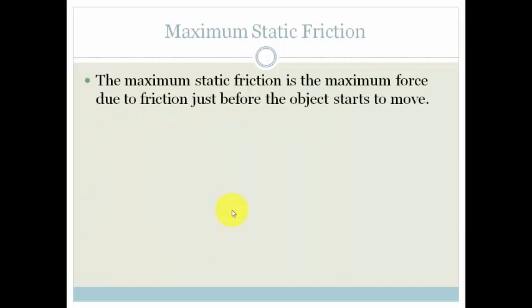Now maximum static friction. Maximum static friction is the maximum force due to friction just before the object starts to move. In other words, when you were looking at that little animation of the guy trying, the stick man trying to push the piano, the point at which the piano just started to move, that was when you had maximum static friction. And that's the maximum force due to friction.